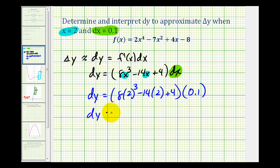Differential y equals forty times zero point one, which equals four. This tells us that delta y, the change in y of the function, is approximately equal to differential y which is four when x equals two and the change of x is zero point one. And that's going to do it for this example.